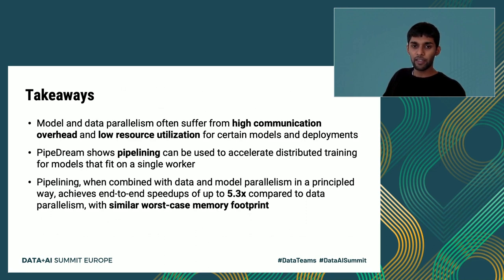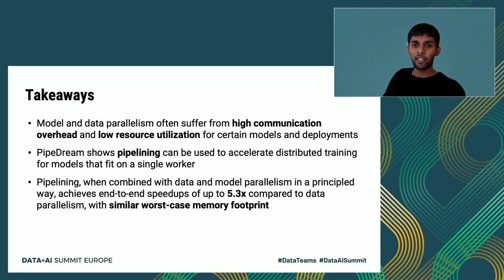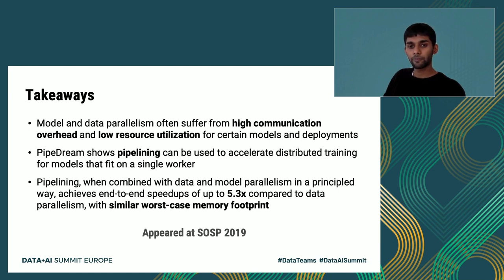Some takeaways from building Pipedream: model and data parallelism are useful primitives to parallelize deep learning training, but they can suffer from high communication overhead and low resource utilization. Pipedream shows that pipelining can accelerate distributed training for models that fit on a single worker, and that pipelining combined with data and model parallelism in a principled way can achieve end-to-end training speedups of up to 5.3x compared to data parallelism with a similar worst-case memory footprint. This work appeared at SOSP 2019.